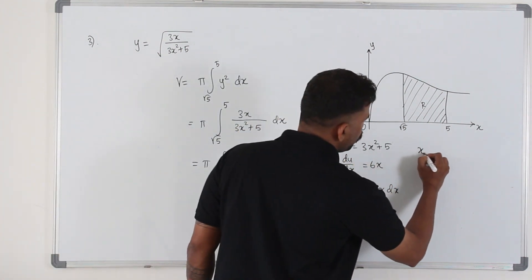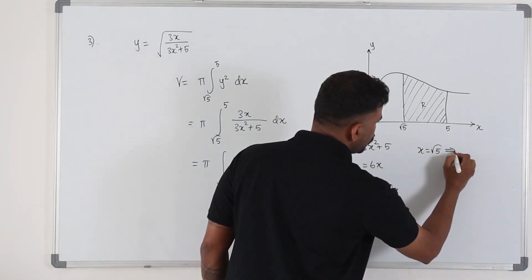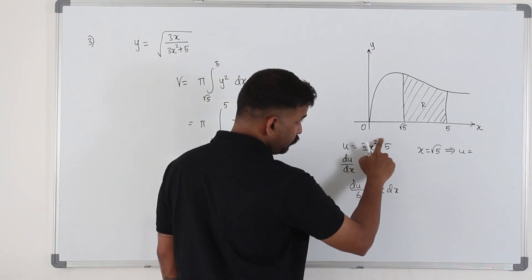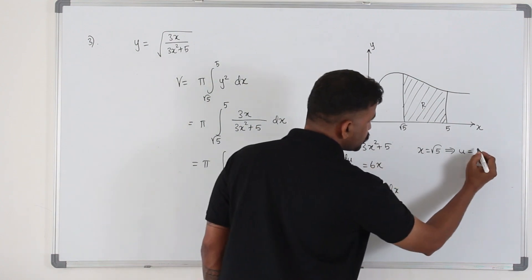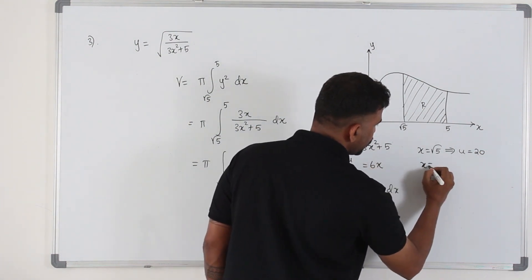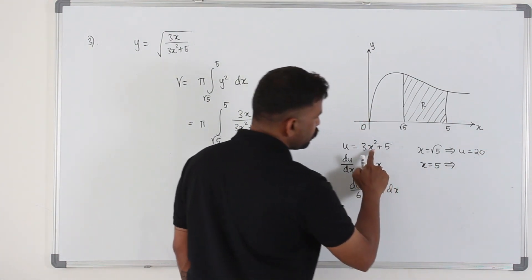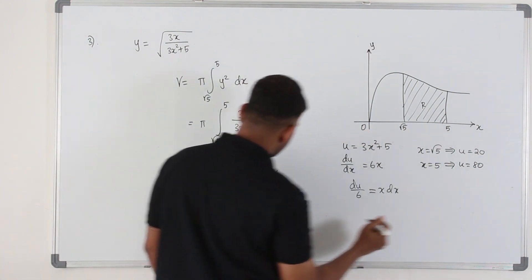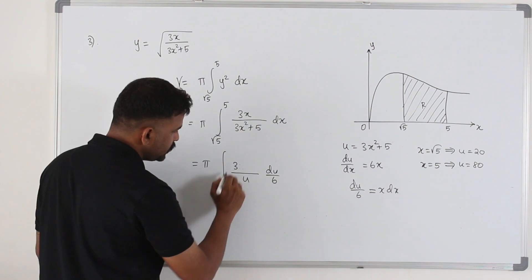So if x is root 5, u is going to be root 5 whole squared, which is 5. 3 times 5, 15 plus 5, 20. x is 5—5 squared is 25, 75, 80. So the new limits will be 20 to 80.